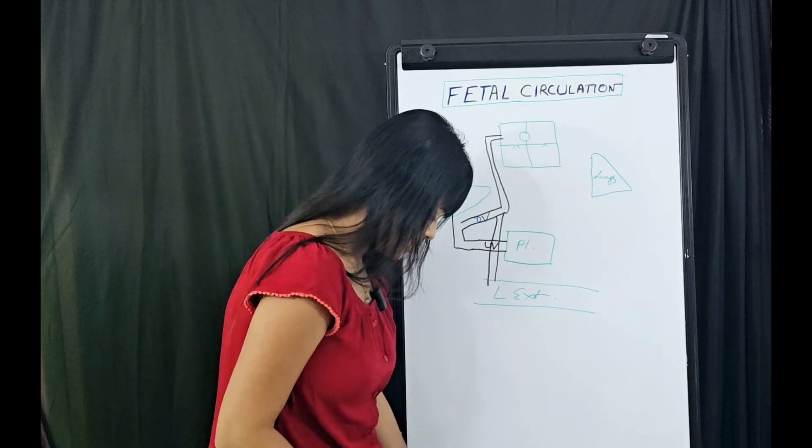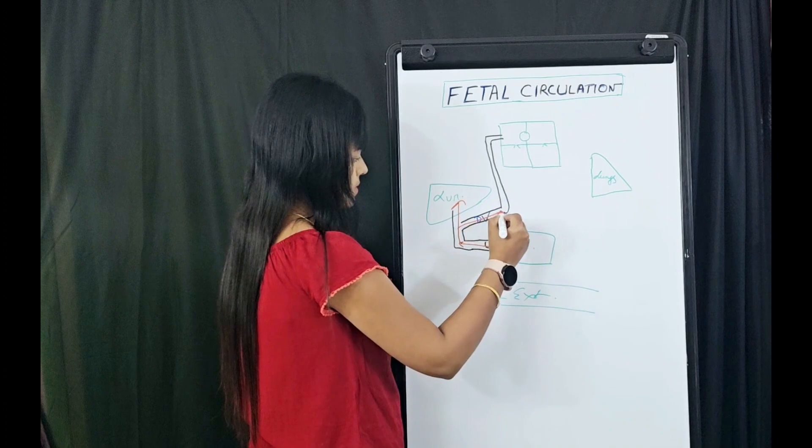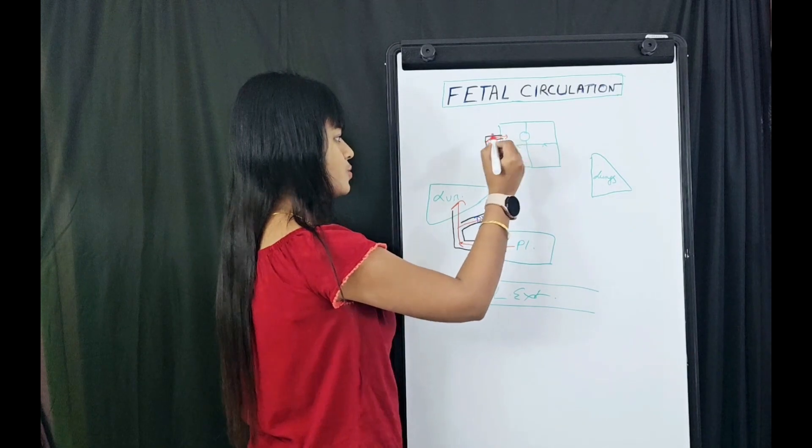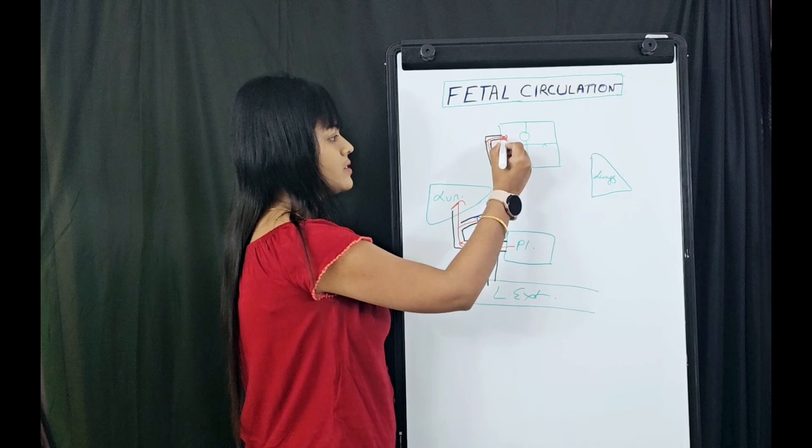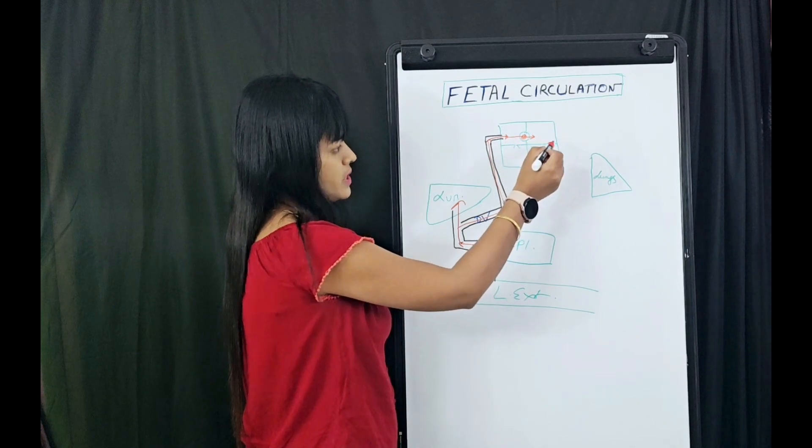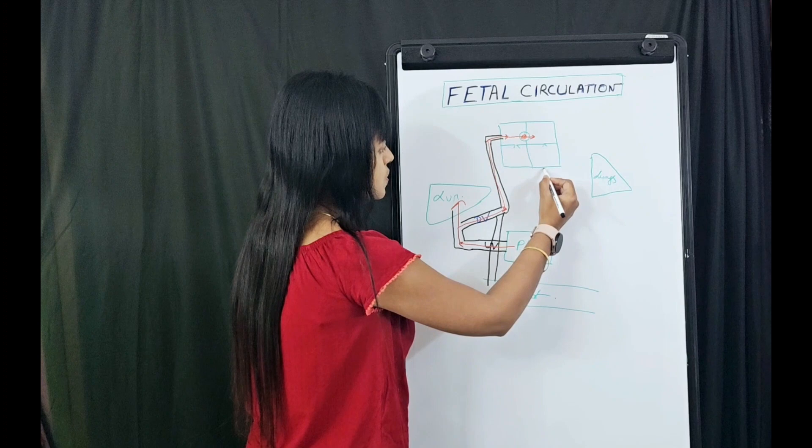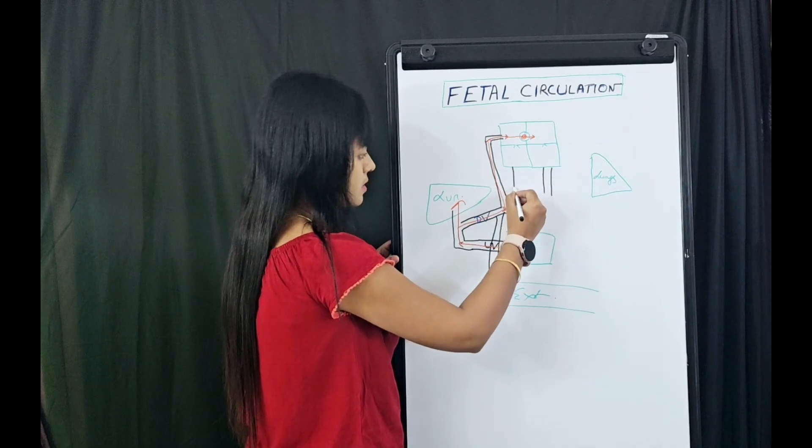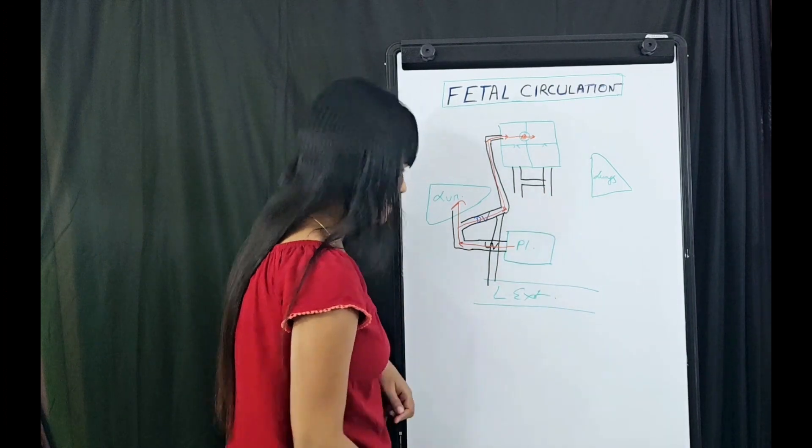From placenta, 50% going to hepatic circulation, 50% bypassing via ductus venosus, and through IVC it's going to right atrium. Here what happens is a valve named Eustachian valve directs the blood from right atrium through the foramen ovale to the left atrium. Now, this is the ascending aorta and the descending aorta. Here is the pulmonary artery and here is your ductus arteriosus.